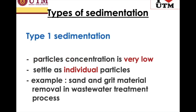There are three types of sedimentation process. Type 1 is where the particles in the water are not very many — very low concentration — so they can easily settle as individual particles with no change in size. Examples are sand and grit material, and these particles are removed in the wastewater treatment process. When wastewater comes into the wastewater treatment plant, the first part is just to remove sand and grit.